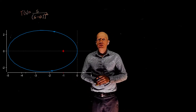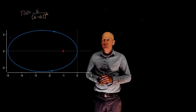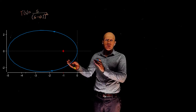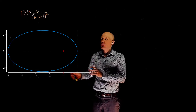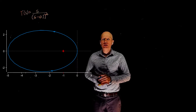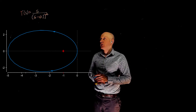Here we have the Nyquist plot for function T of S. We need to observe the number of encirclements of negative 1 and the number of unstable poles of the open-loop transfer function.